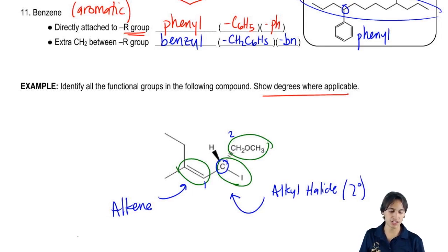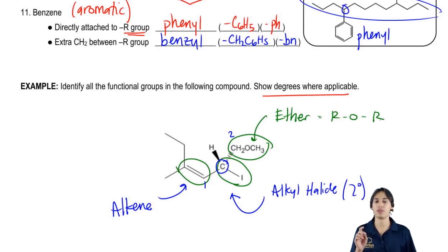And then finally, what did you guys get for this last one? This would be ether. Because this falls into the ROR category where I have ROR and there's no carbonyls around so this would not be like an ester or anything like that. So does that make sense to you guys so far? Hopefully this is helping you to reinforce all the groups that we just learned. So let's go ahead and go to the next page.